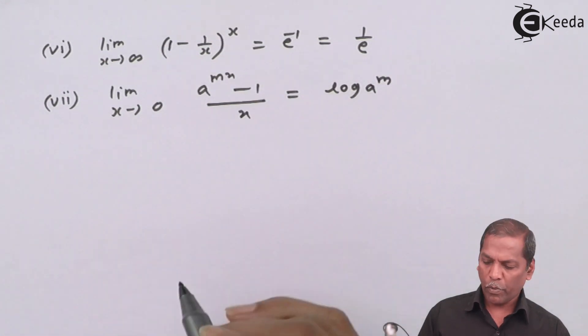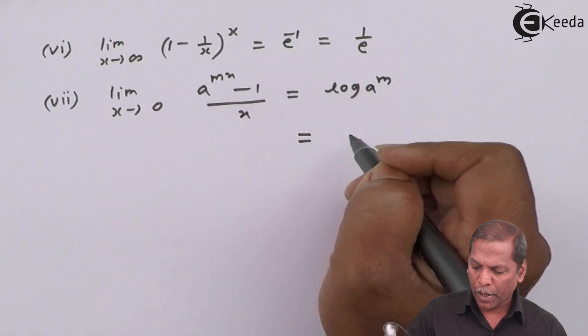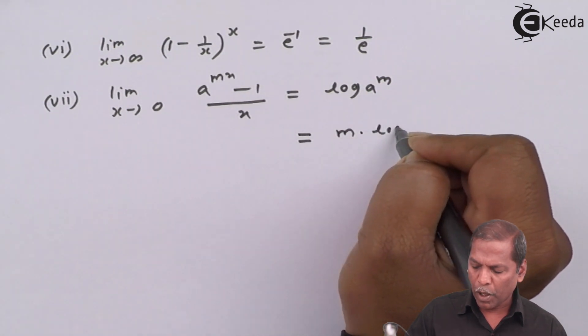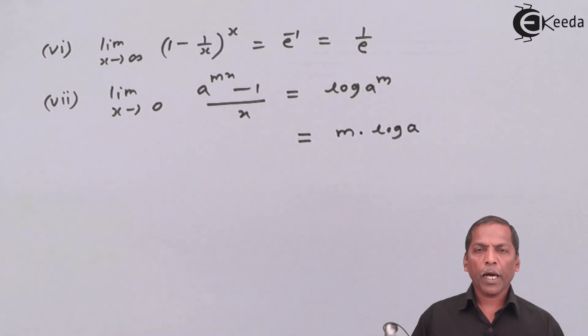And that can be written as m times log a by using the exponent law of logarithm.